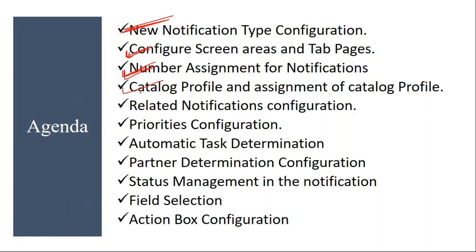We will cover catalog profile and assignment of catalog profile — we already discussed what a catalog profile is and what its use is, and how it needs to be assigned to notifications. Then related notifications configuration, which I will show in the system. Then priorities configuration — like very high, high, medium, low — those priority configurations. Then automatic task determination: sometimes based on the priority, you can define the tasks automatically.